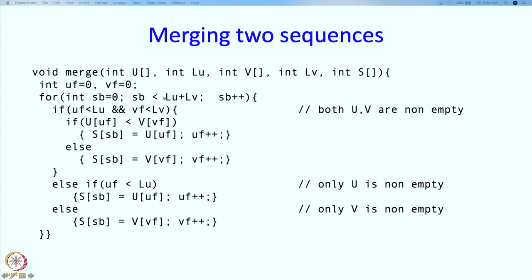It is going to run LU plus LV iterations and therefore its time is going to be proportional to LU plus LV since in each iteration we are going to do some fixed amount of work. The work may be different depending upon whether both queues are non-empty or only one is non-empty, but it is going to be some fixed amount of work.